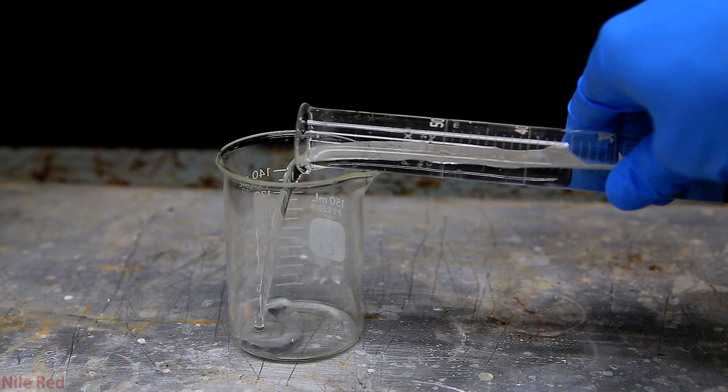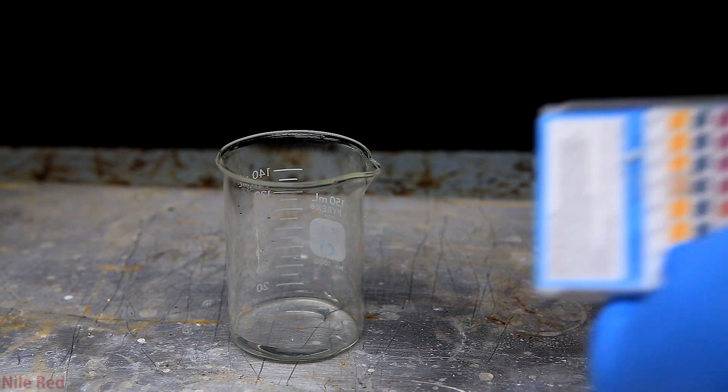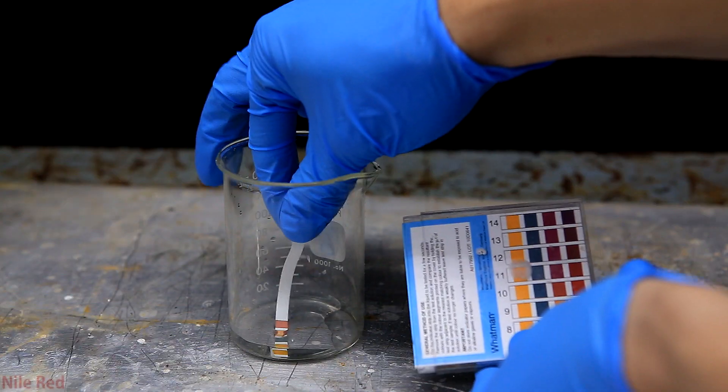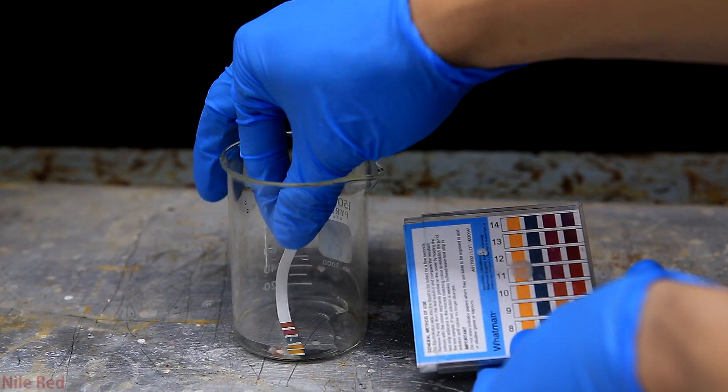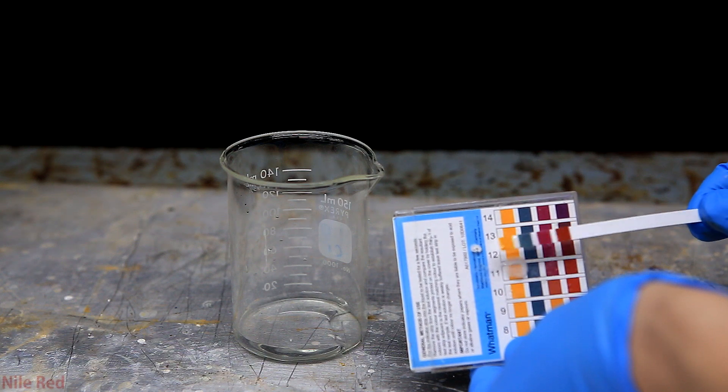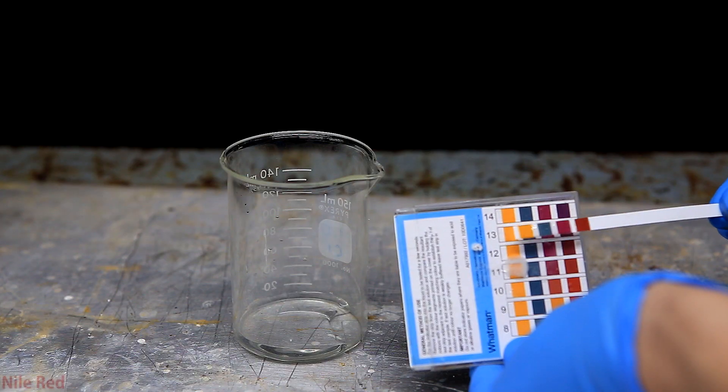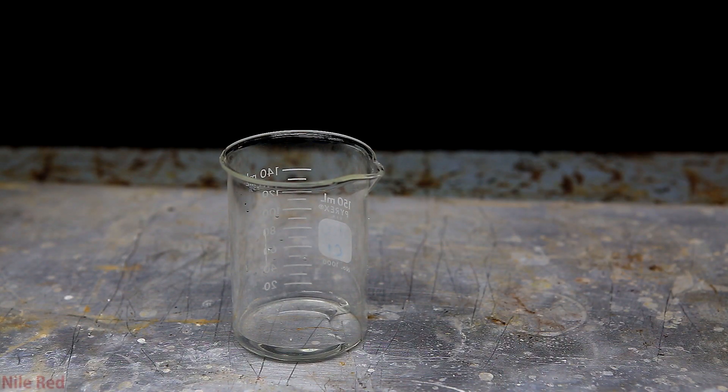After a little while, our ammonium hydroxide solution is removed from the generator and I add a little bit to a beaker. Using some universal pH strips, we can test the pH and we can see that it's mildly basic. Ammonia is a weak base, so it doesn't ionize super well in water. So especially when it's a little bit dilute like the solution we have, the pH isn't going to be super high.